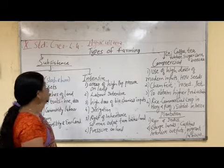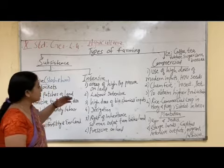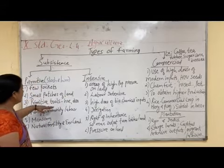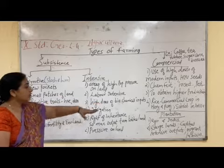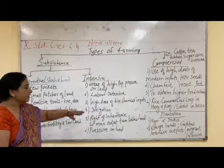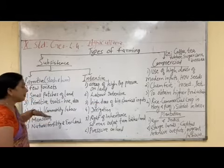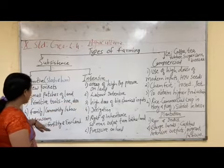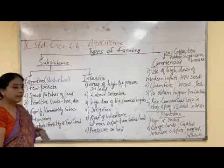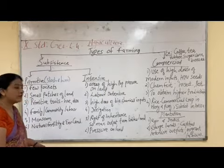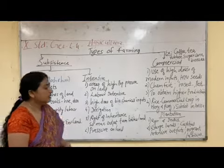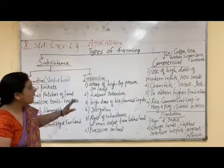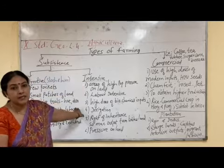We can see the difference between primitive and intensive subsistence agriculture. Primitive subsistence uses primitive tools, family and community labour is enough, farmers depend on monsoon, and natural fertility of the soil is sufficient. Intensive subsistence uses high doses of chemical inputs and modern means of irrigation, requires more labour, and natural fertility alone is not enough — extra inputs are added.